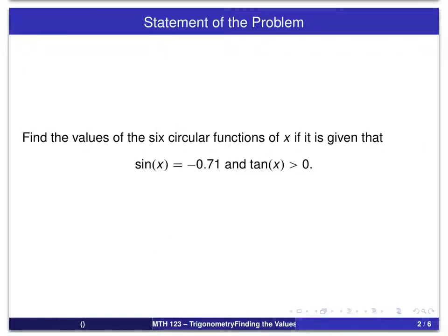Here's our problem. It is somewhat similar to the other one, but just a little bit different. We're given a value of sine of x equal to minus 0.71, and the tangent of x being greater than 0.